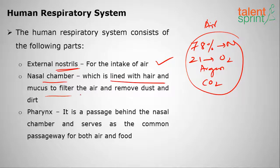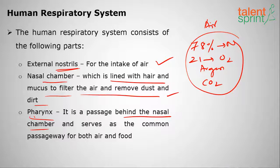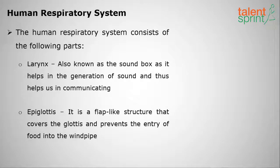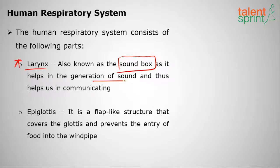After entering the nostrils, we have the nasal chamber, which is lined with hair and mucus to filter the air and remove dust and dirt. Next is the pharynx, a passage behind the nasal chamber that serves as a common passageway for both air and food. Next is the larynx, also called the sound box, which is very important as it helps in the generation of sound and communication.